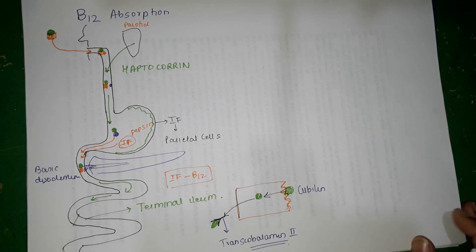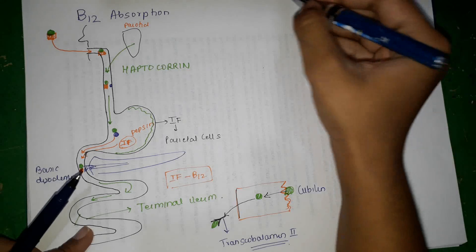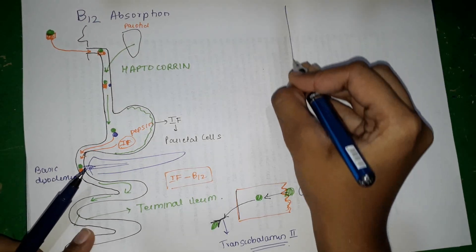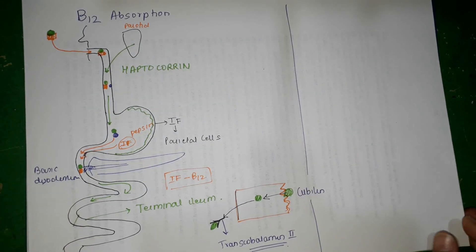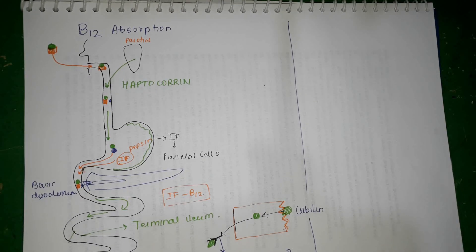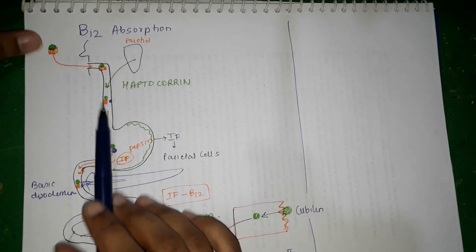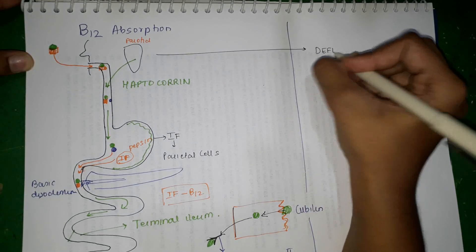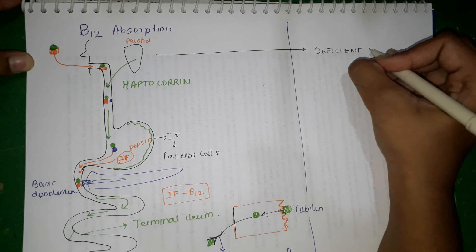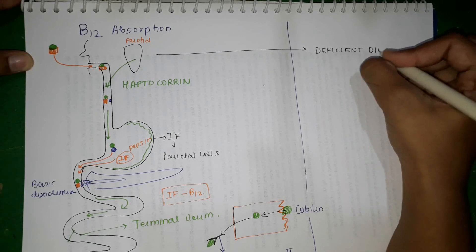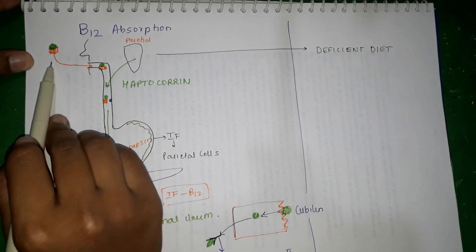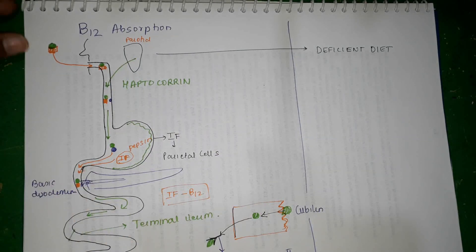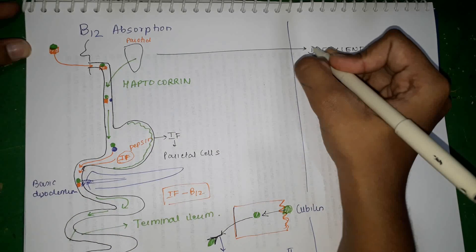These are all the factors necessary for vitamin B12 absorption. Now, if we want to look into the causes of vitamin B12 deficiency, we can examine them one by one by knowing where vitamin B12 absorption occurs. The first cause where vitamin B12 deficiency can occur is a deficient diet, and this is most commonly seen in people who are pure vegetarians. If intake is simply not there, there is no chance for any of the absorption mechanisms to operate — that is the first important cause.